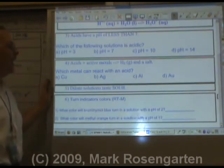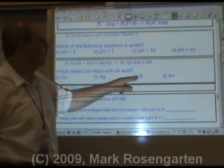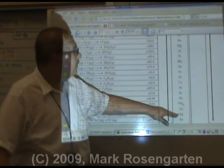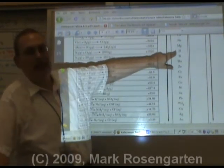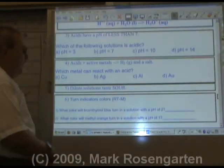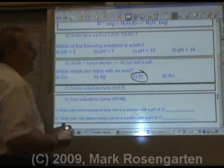So which metal can react with an acid? Copper, silver, aluminum, or gold? Copper, silver, aluminum, or gold? Aluminum is the only active metal of the bunch. Therefore, aluminum can react with an acid.